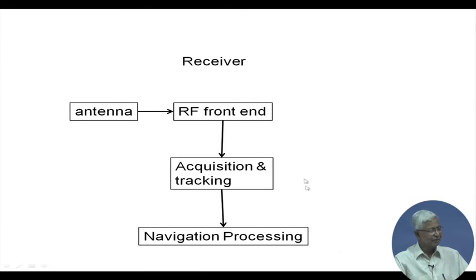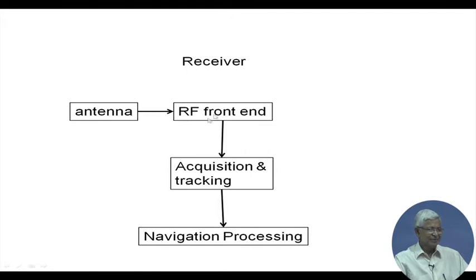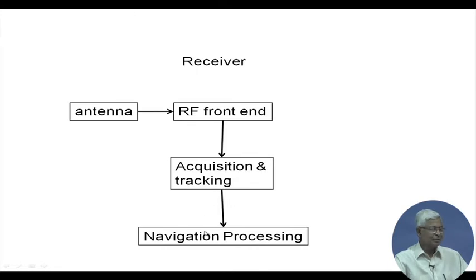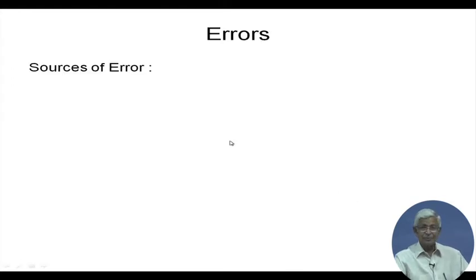The receiver block diagram has an antenna — mostly omnidirectional but at least looking at the sky — followed by an RF front end with RF amplifiers. After digitization, it performs acquisition and tracking in the search space. Once the data is found, it goes into navigation processing, which extracts the data and performs the linearization to find position, velocity, and time.